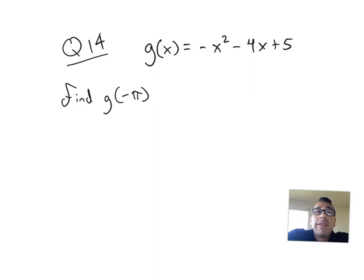Let's check out number 14. We're given this function g of x, where g of x equals negative x squared minus 4x plus 5. And they want us to find g of negative pi.